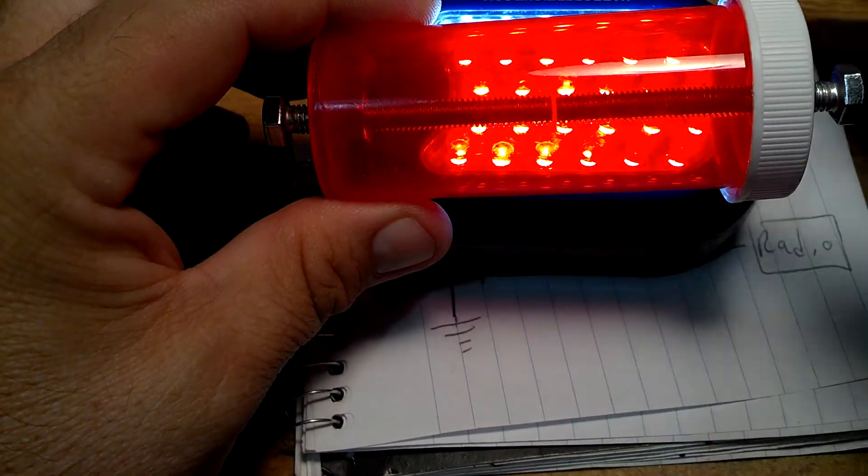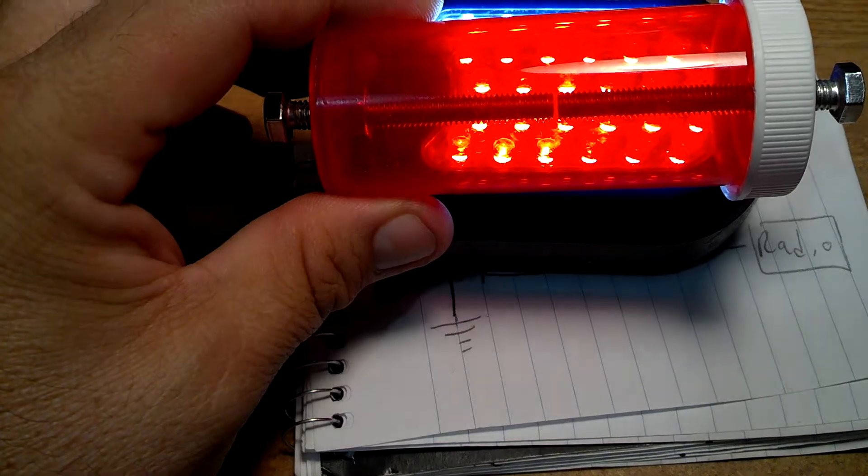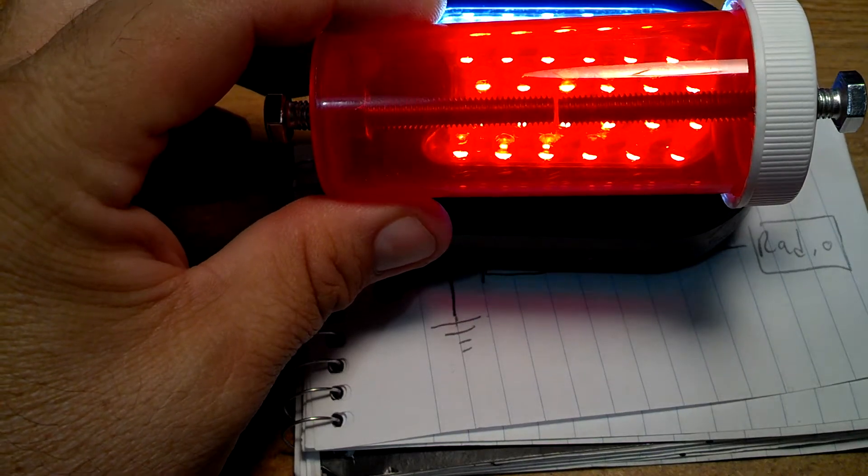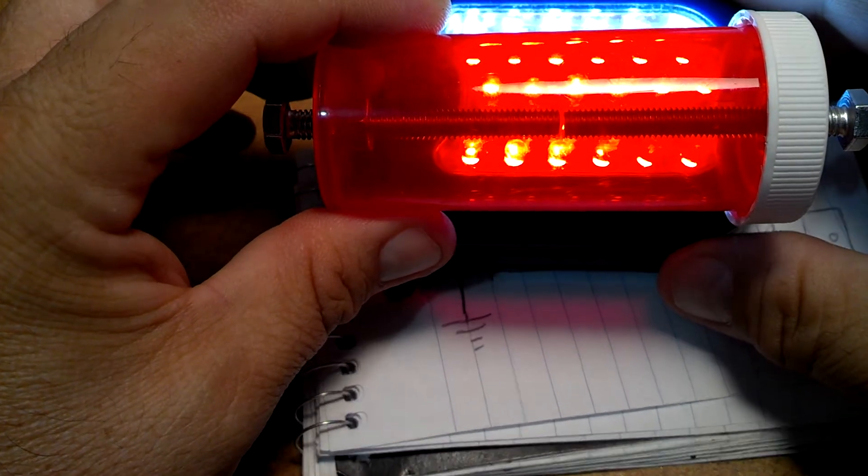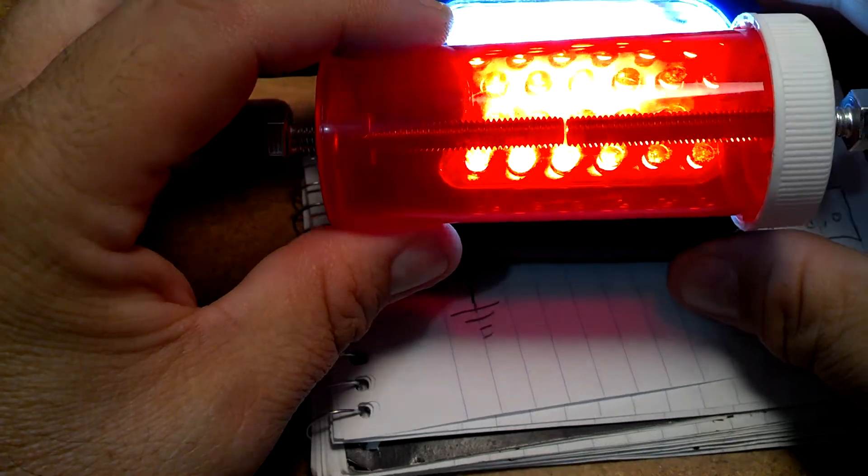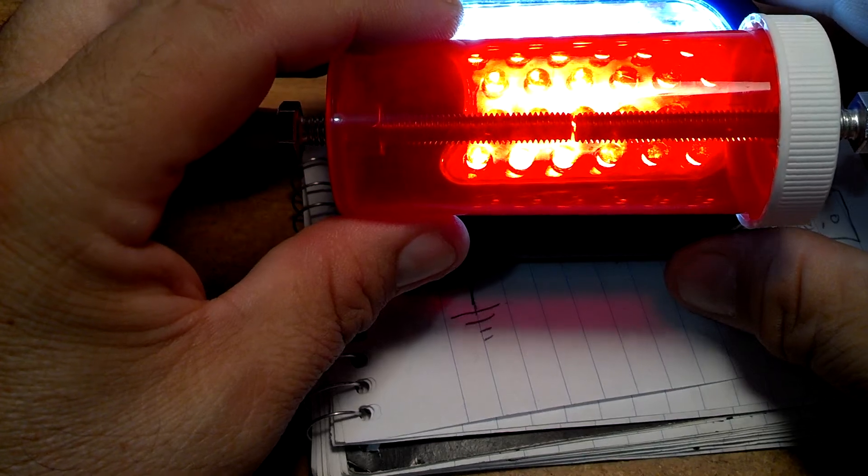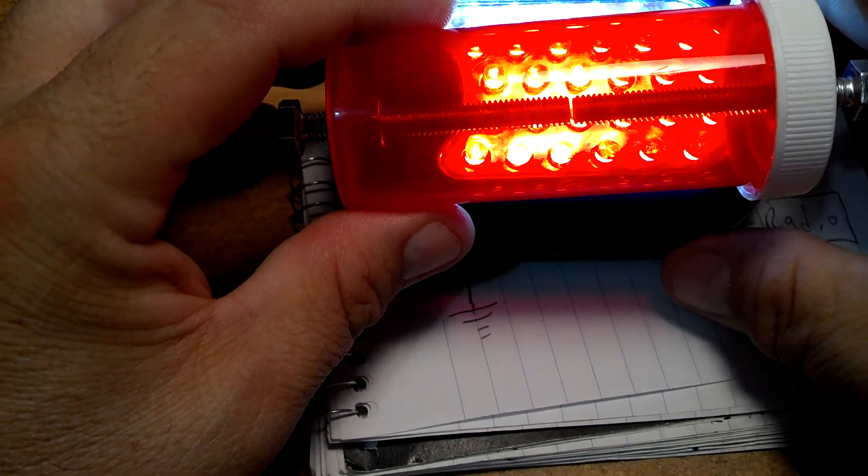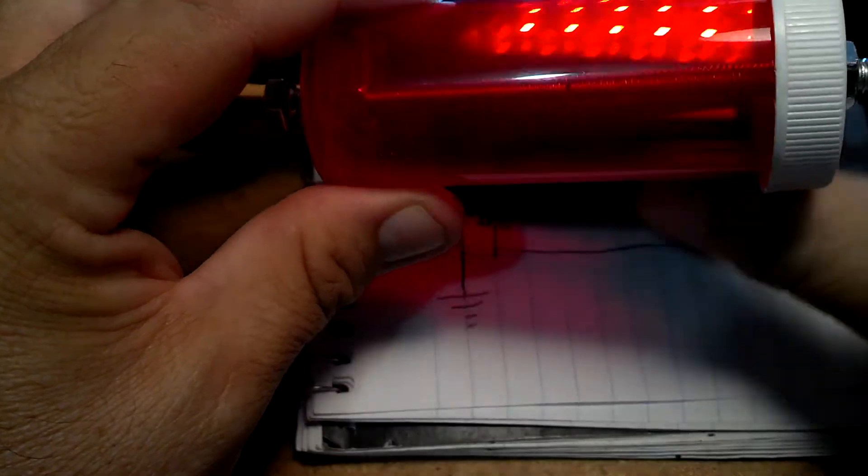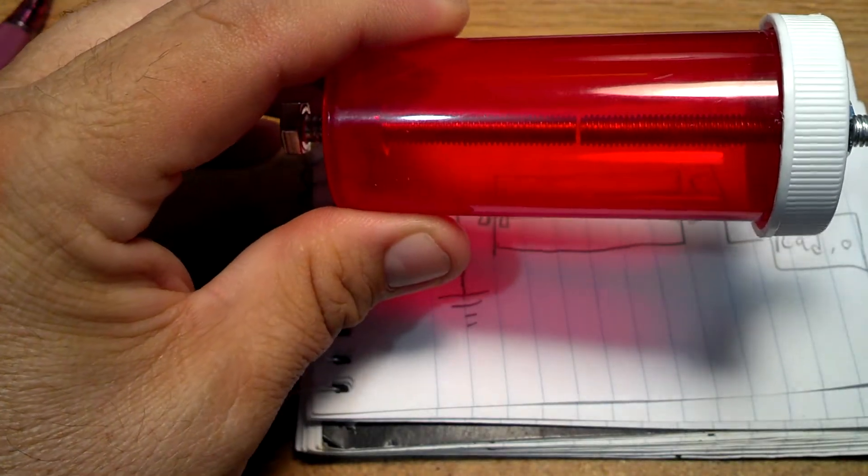The dielectric or the breakdown strength of air, where it breaks down and becomes a conductor, is three kilovolts per millimeter. So this is about half a millimeter, I think. I'll have to double check, but when I install it I'll check. That should bring us down to about fifteen hundred volts.